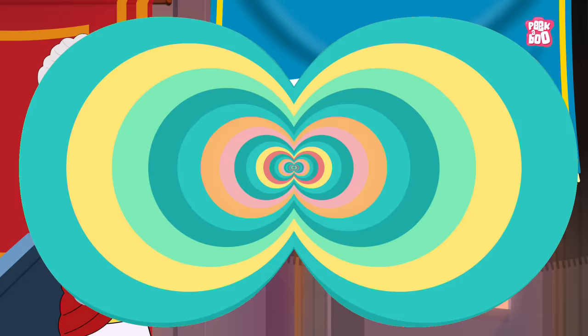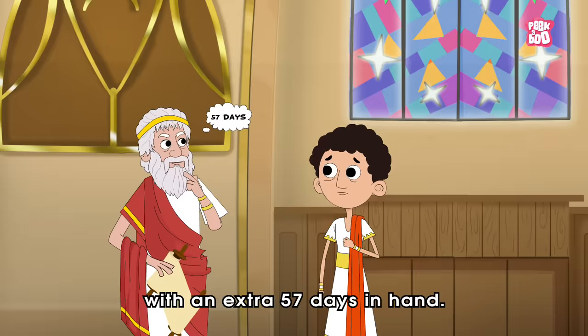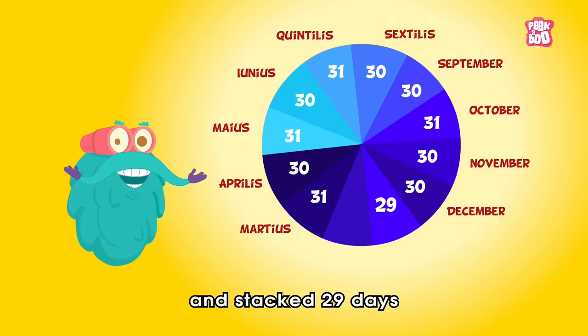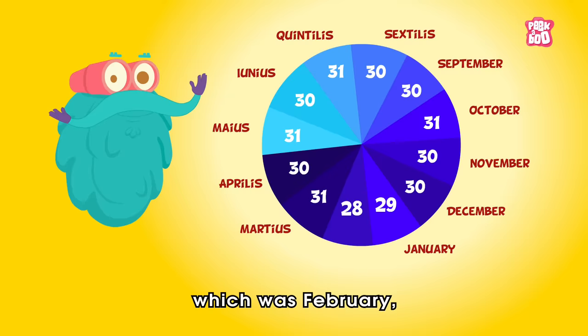But the problem was even bigger now, as they were left with an extra 57 days. So to cover them up, King Numa added two more months at the end of the calendar — stacking 29 days to one month, which was January, and 28 days to another, which was February, the shortest month of the year.